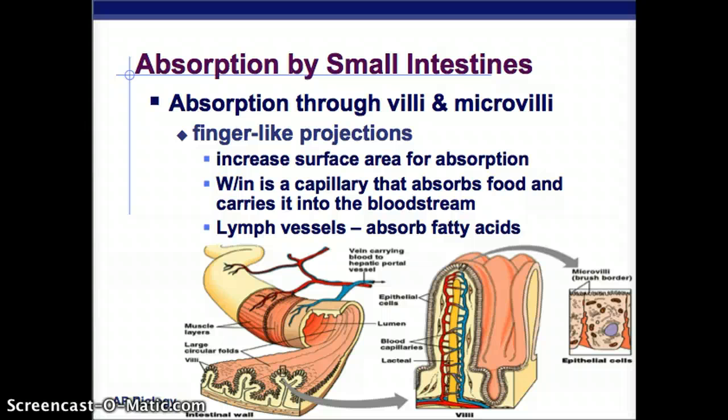In a villus, there's a capillary connected to our circulatory system that absorbs food and takes it into the bloodstream — that's how it absorbs those nutrients. There are also lymph vessels, and they absorb fatty acids.